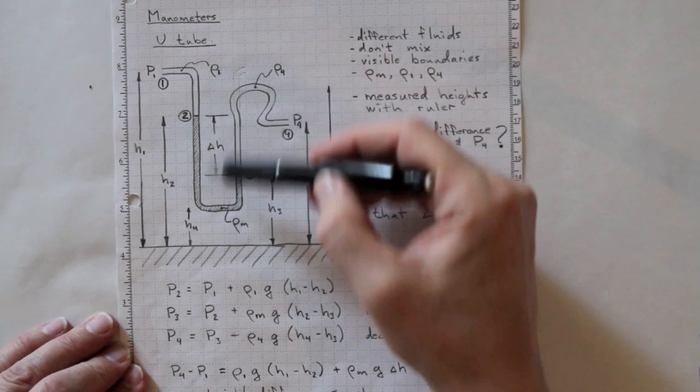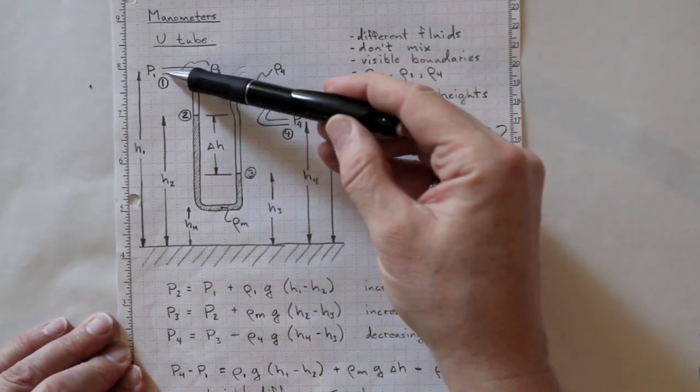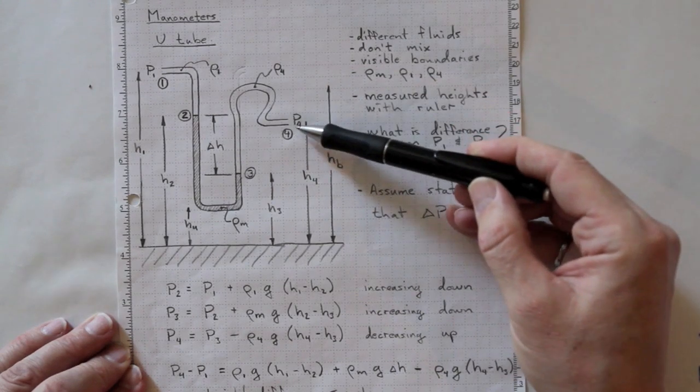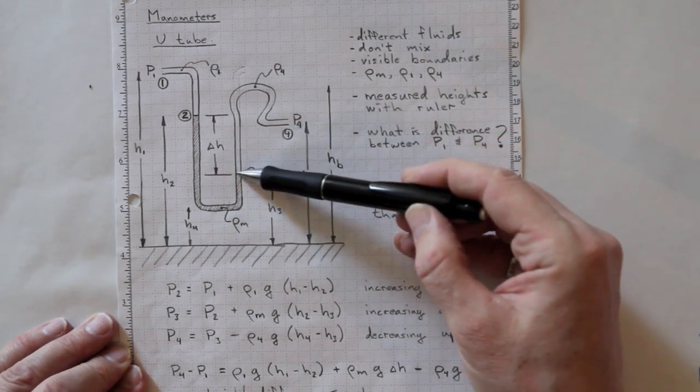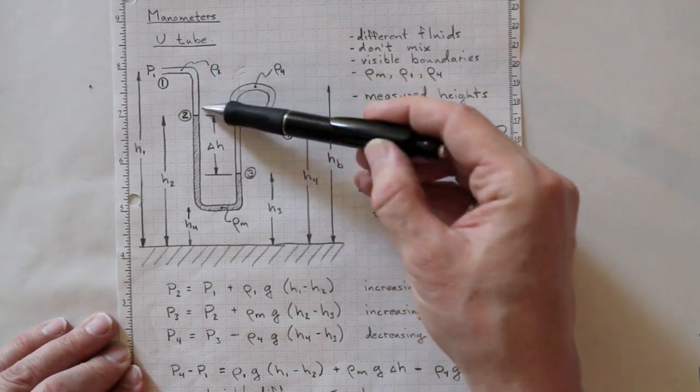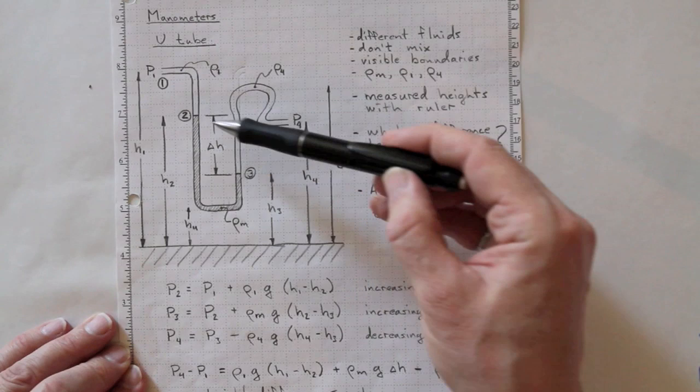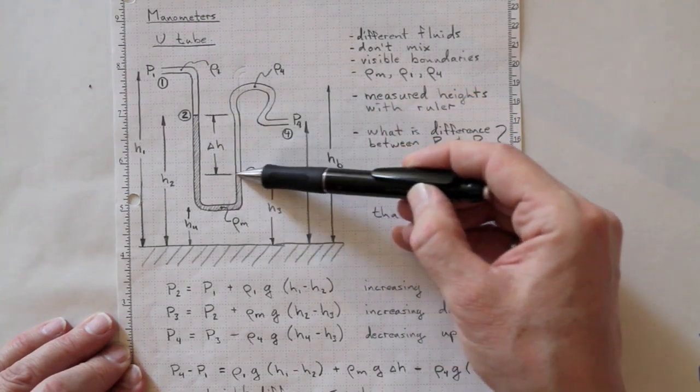We can use a U-tube manometer like this one to measure differences in pressures. If we have a pressure P1 and a pressure P4 and we'd like to know the difference between them, then by looking at the densities of all the fluids involved, we can figure out that pressure difference based on this difference in height.